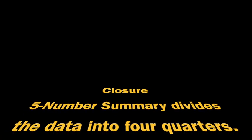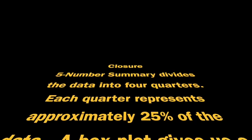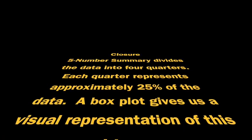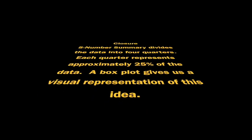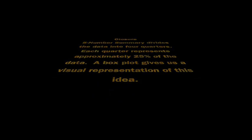To summarize, the five number summary is a list of five numbers that divides the data evenly into four quarters. Each one of these quarters then representing approximately 25% of the data. A box plot gives us a visual representation of this idea. If you came up with anything else, write that down now. Otherwise, we'll see you in the next lesson.